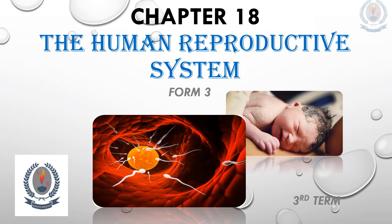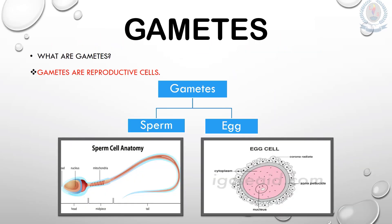What are gametes? Gametes are reproductive cells. In humans, the male gametes are known as sperm, and the female reproductive cells are eggs. In the picture you can see the structure of a sperm and an egg.